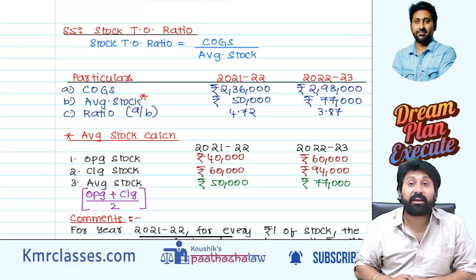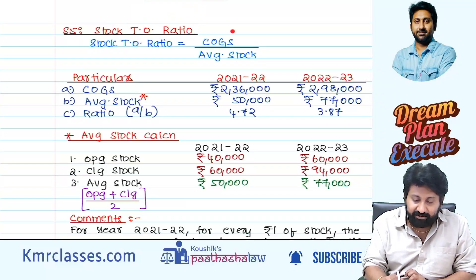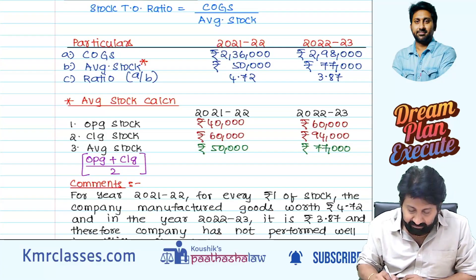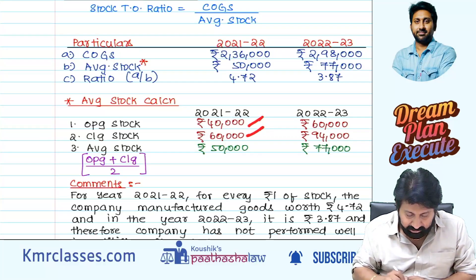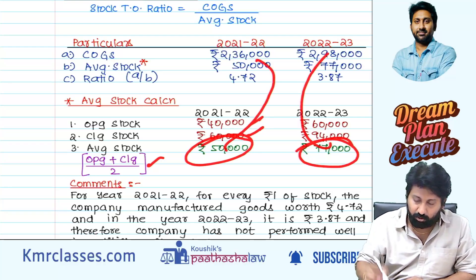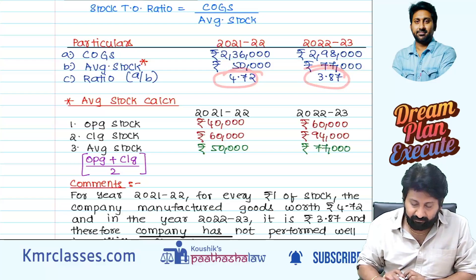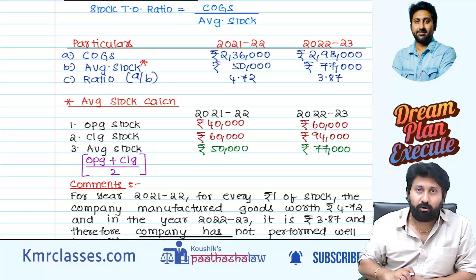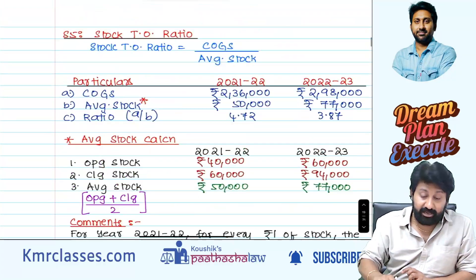Stock turnover ratio is very very important. Whenever two years' data is given and stock turnover ratio is required, it is COGS by average stock. Average stock is calculated as opening stock plus closing stock divided by 2. They will give you opening stock and closing stock in the question. Cost of goods sold divided by average stock gives you, for example, 4.72 times or 3.87 times. More the stock turnover ratio, better the company.